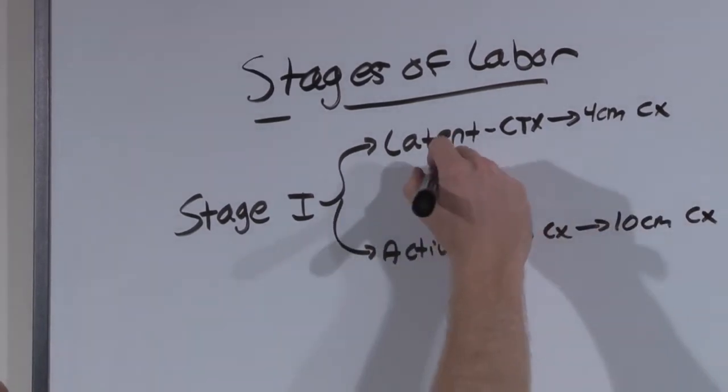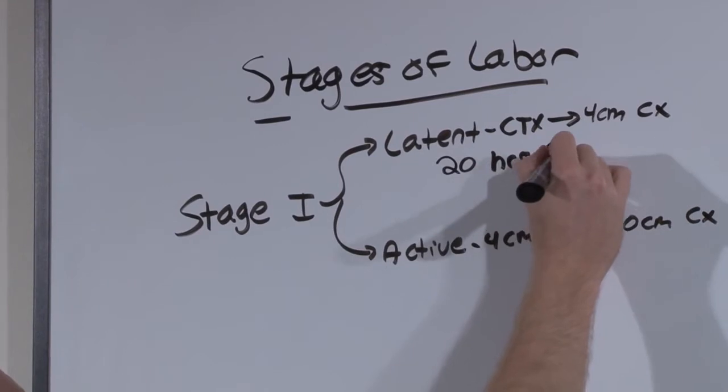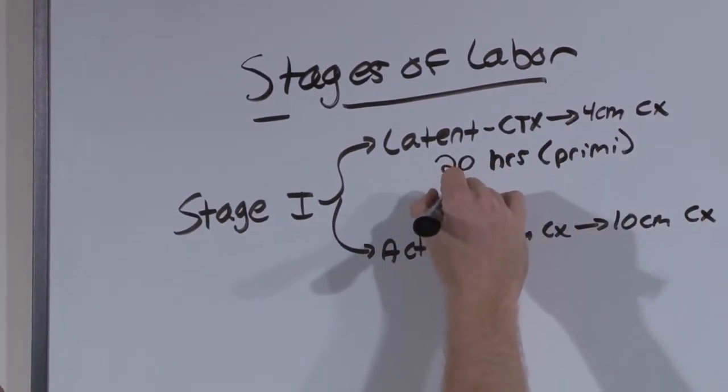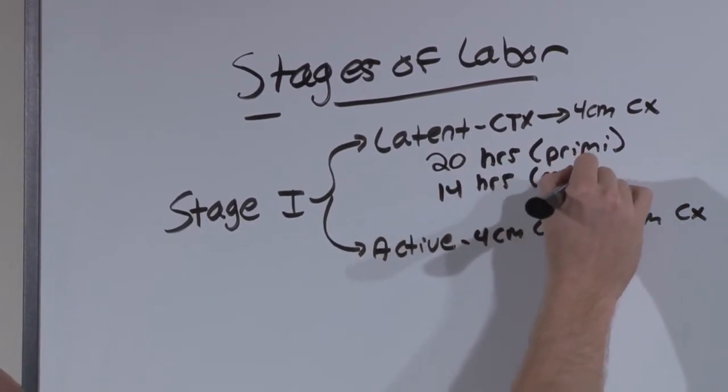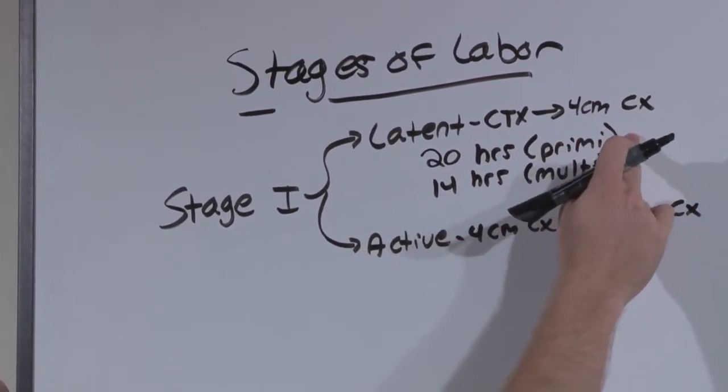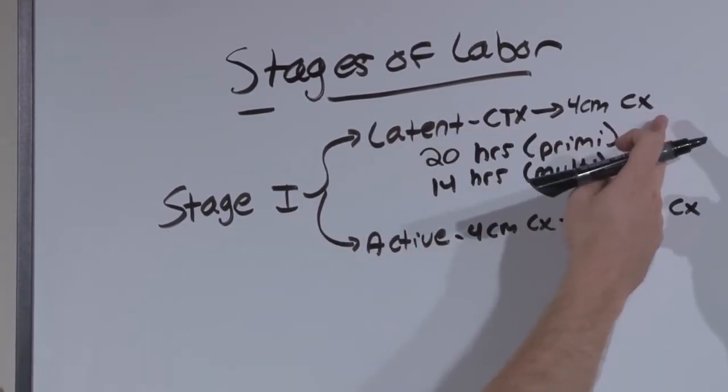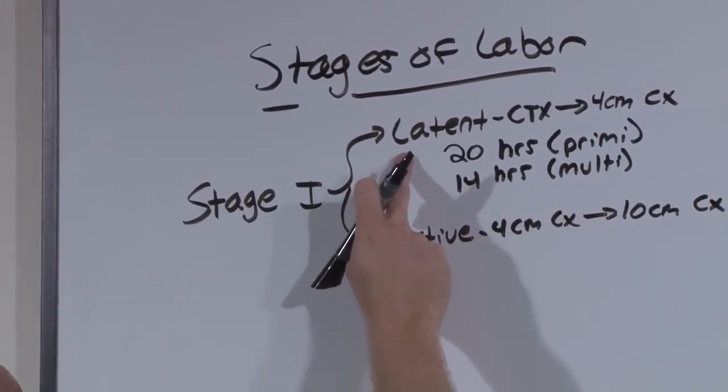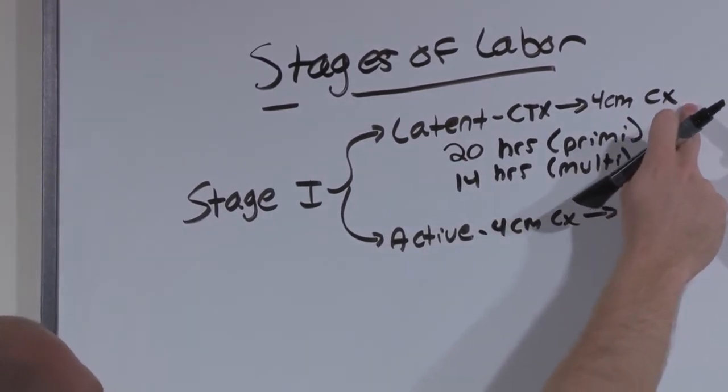The latent phase should last about 20 hours for a first timer and last about 14 hours for a repeat offender. That is, the primiparous woman will spend about 20 hours in the latent phase with contractions until she's 4 centimeters, whereas the multiparous female will spend about 14 hours in the latent phase experiencing contractions until her cervix begins to dilate.